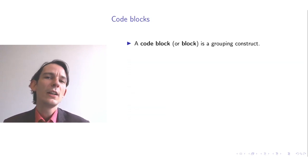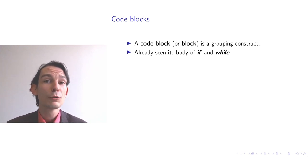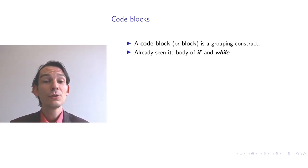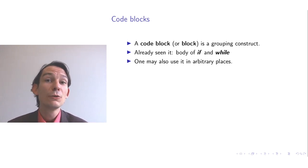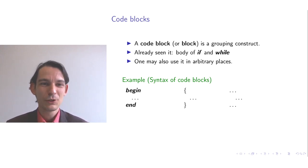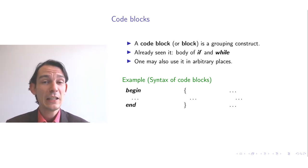A code block can be understood as a way of grouping commands together. You have already seen code blocks in the body of the if and while commands, but you can also introduce them standing on their own, allowing code blocks in arbitrary places. Different syntaxes exist: in Pascal-like or Algol-like languages you use begin and end; in C-like languages, curly braces; and some languages like Python indicate code blocks using whitespace indentation only.